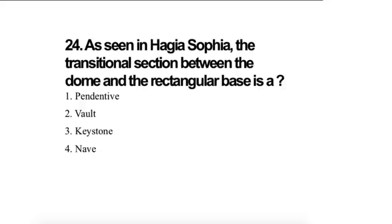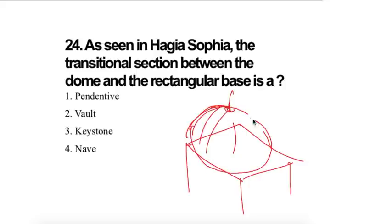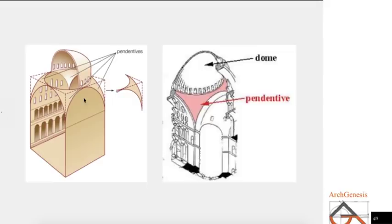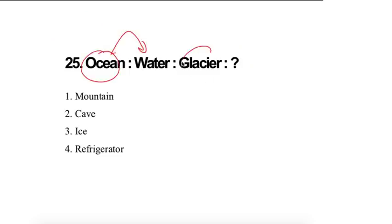As seen in Hagia Sophia, the transitional section between the dome and the rectangular base. This was the rectangular base is there and if you want to keep a dome over here, the question is how do you keep a dome? So how will you transfer the load from the dome to the walls? This technique was called as pendentives. Here you can see this is like rectangular wall and the dome is there. They made like a triangular structure and this structure is called as pendentive. Remember this thing, it is very important.